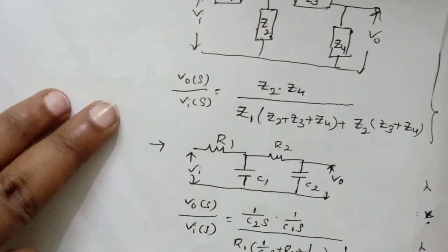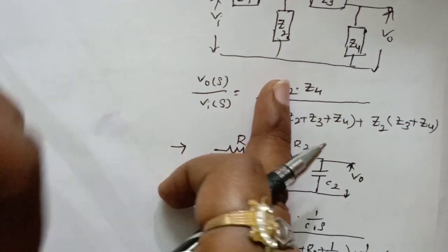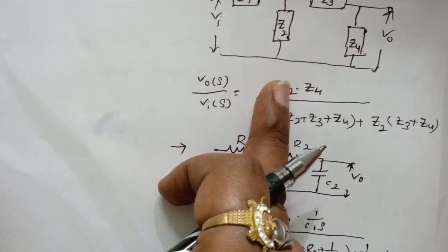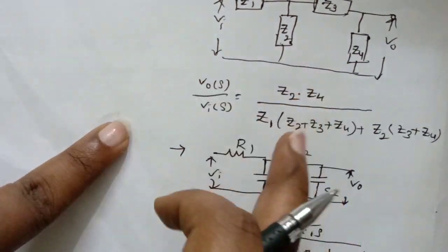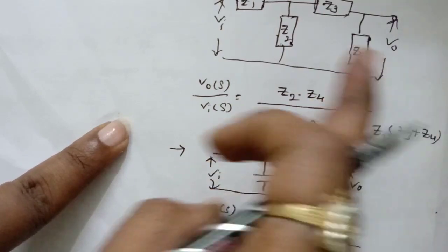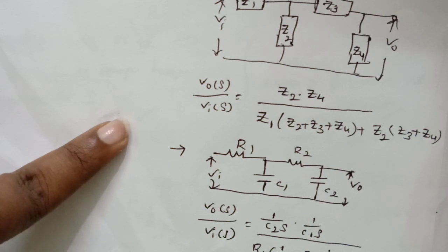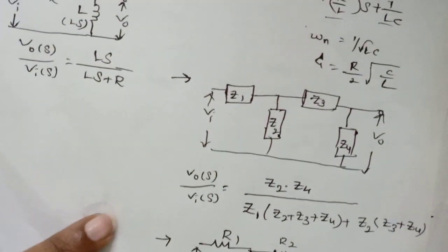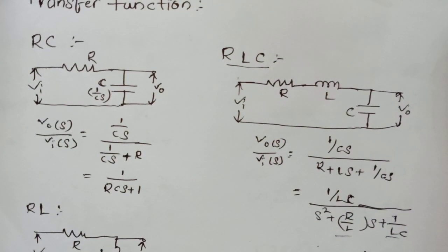Hope you guys understood the topic very clearly. This is how we can write any transfer function for any network with any number of loops — just follow this approach. Since I am having only two loops here, I write only Z1 and Z2 in the denominators; for three loops go for Z3 and Z4. Thank you, please do like and share, and watch my previous videos. I'll be uploading more important tricks for your upcoming examinations.